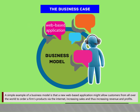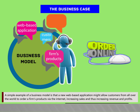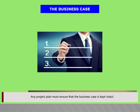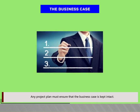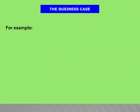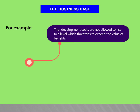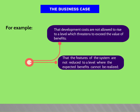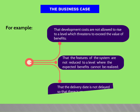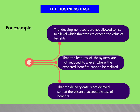A simple example of a business model is that a new web-based application might allow customers from all over the world to order a firm's product via the internet, increasing sales and thus revenue and profits. Any project plan must ensure that the business case is kept intact — that development costs are not allowed to raise to a level that threatens to exceed the value of benefits, that the features of the system are not reduced so that expected benefits cannot be realized, and that the delivery date is not delayed causing an unacceptable loss of benefits.